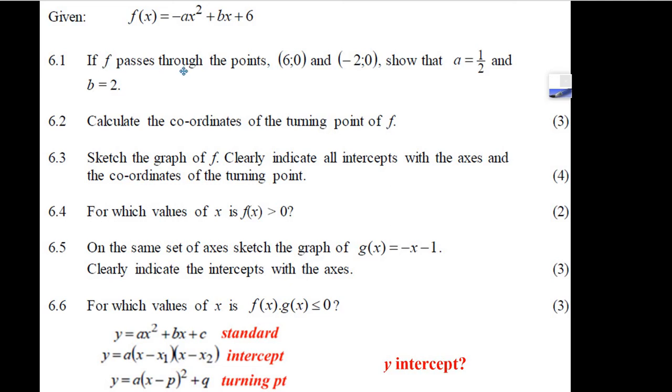They also tell us that f passes through the points (6, 0) and (-2, 0). So we've got x-intercepts. If we go down here, it says we're supposed to show that a is a half and b is 2, that we know what those numbers are.